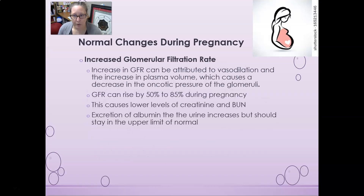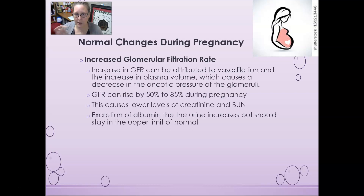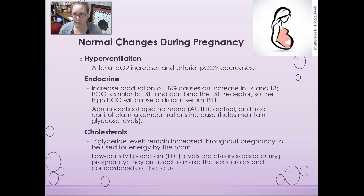There is also an increased glomerular filtration rate, attributed to vasodilation in the cardiovascular system and the increase in plasma volume, which decreases oncotic pressure at the glomerulus and produces more urine. The GFR can rise by 50 to 85% during pregnancy. This can cause lower levels of creatinine and BUN — waste products used to measure renal function. Excretion of albumin in the urine will increase, but should stay within the upper limit of normal; a big jump in urine albumin is not expected.